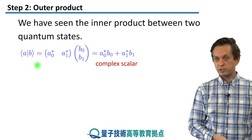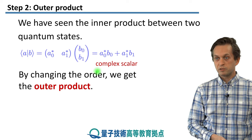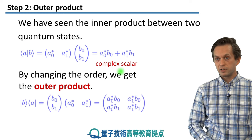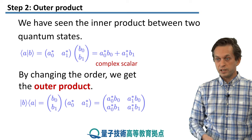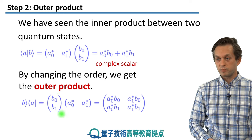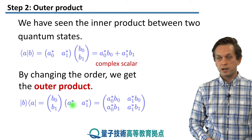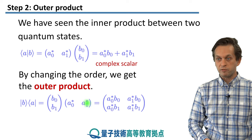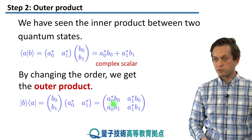But what happens if we change this product here, if we change the order of it? Instead of having bra of A times the ket of B, we have the ket of B times the bra of A. Well, in that case, we are multiplying a column vector, B0, B1, by a row vector, A0 star, A1 star, where I remind you this bra is the conjugated vector and transposed.